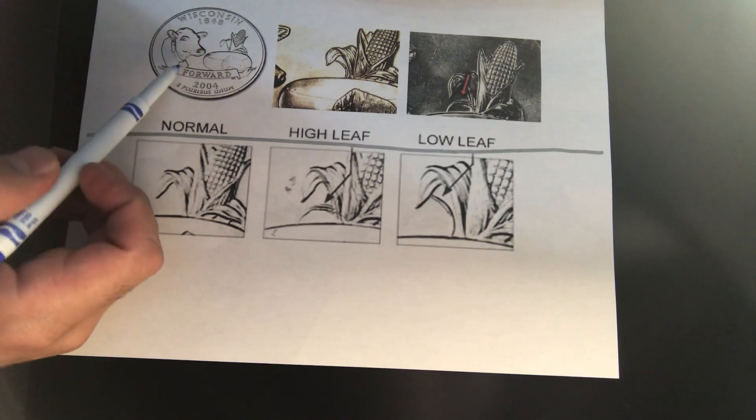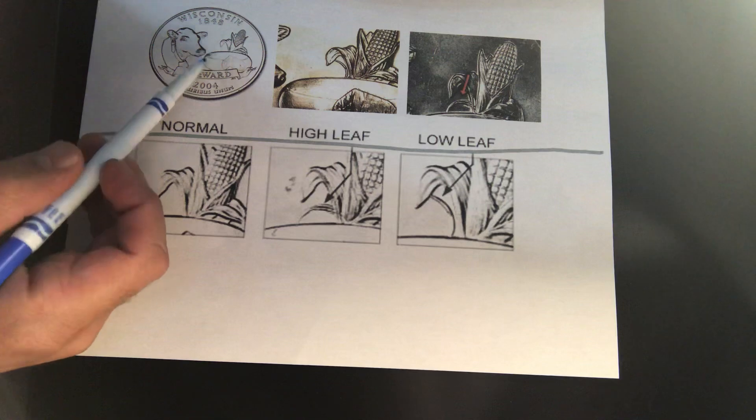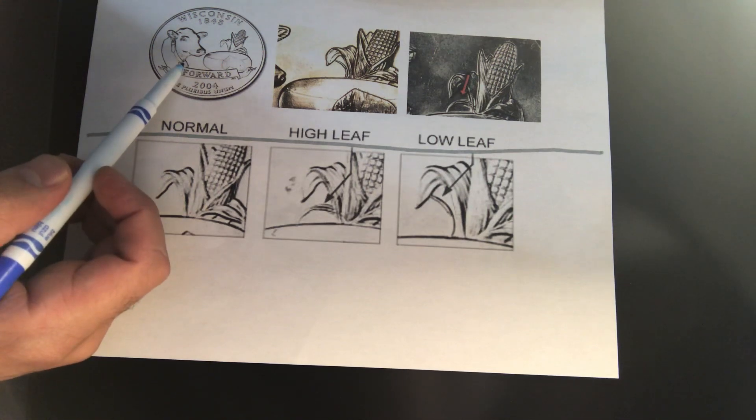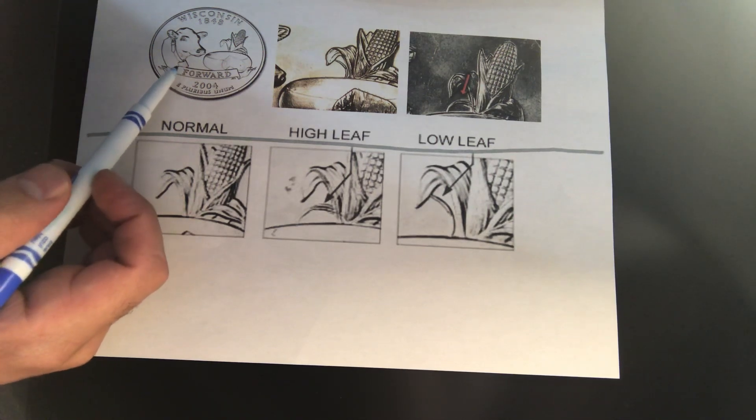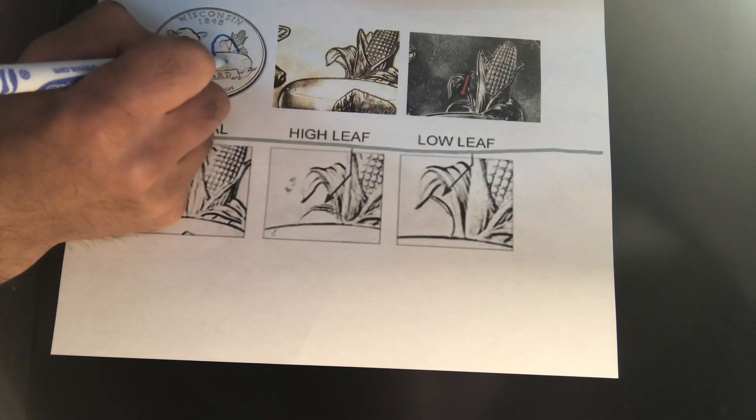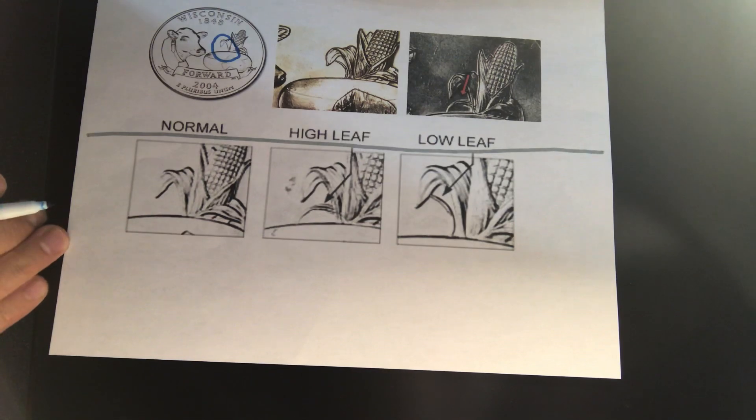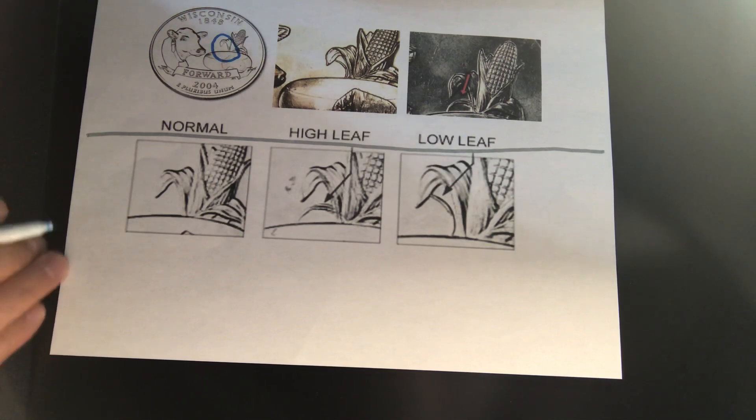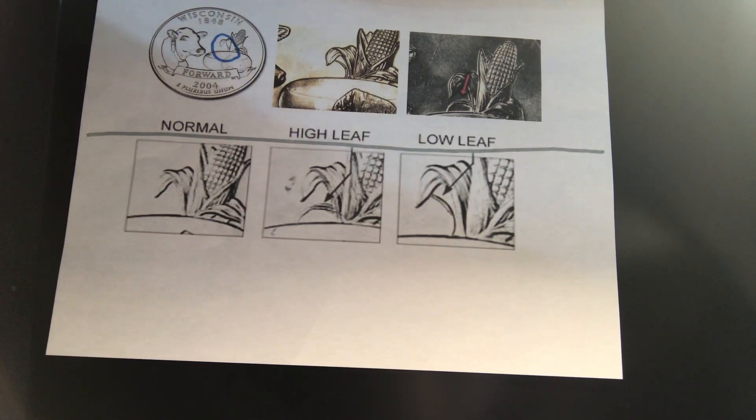You can only find the low-level and high-level leaves from Denver with the D mint mark. So, you just concentrate on this spot. It's really easy to find. Basically, you don't even need to magnify to see it. So, that's the difference you're looking for.